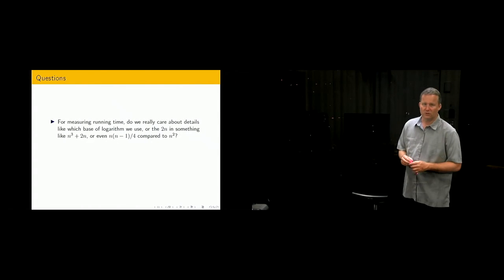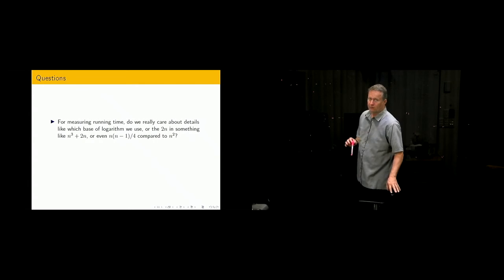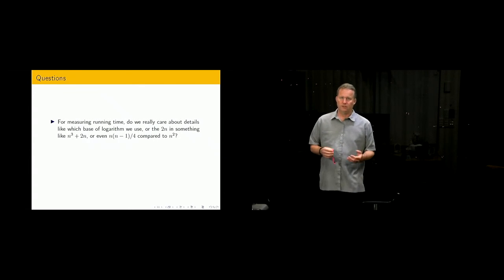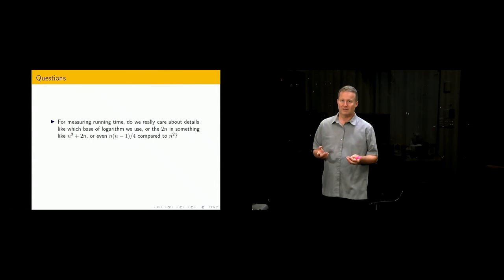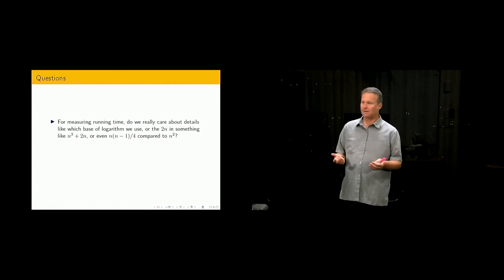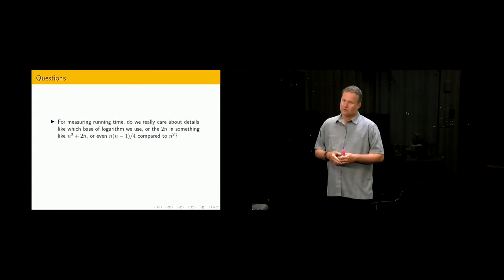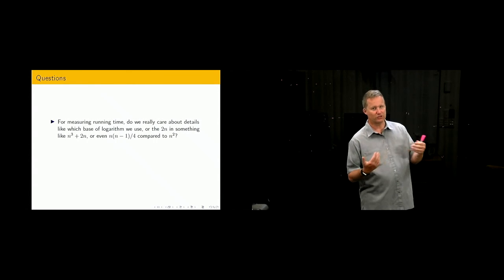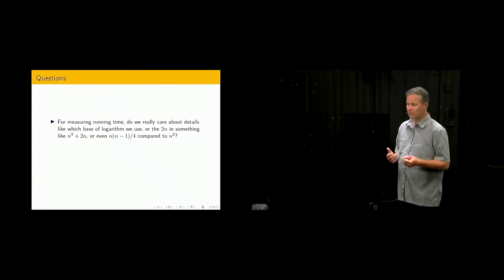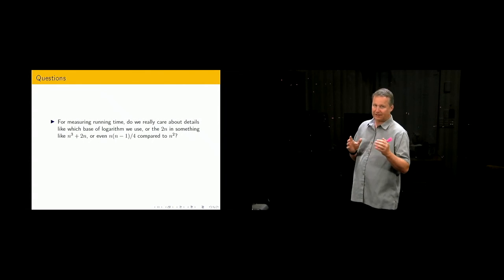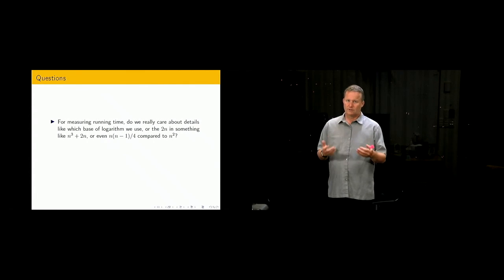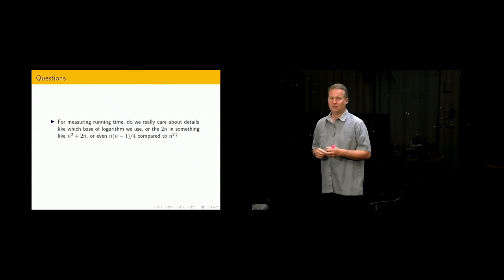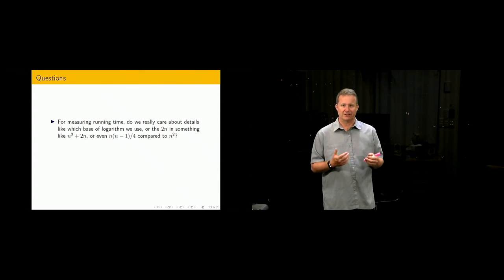So now, as always, we come to the questions. And the first one deals with this issue of approximately counting. In the end, how much do we care about the difference between n squared and 2 times n squared? Or n squared and n squared plus n. Or log to the base 3 against log to the base 2. How much difference does it really make when we're trying to make clear distinctions about the efficiency of our algorithms? That's the first question. I just want you to think about that, and we'll deal with that, actually, in the next lecture.